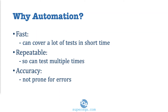So why automation? Why is automation so popular or so big? Why do we need it? Because it is super fast. It's a software doing something you would manually do, so it runs really fast, which means you can cover a lot of tests. Typically a team will have hundreds if not thousands of tests that need to be executed.